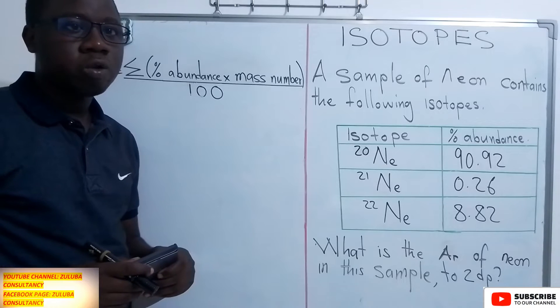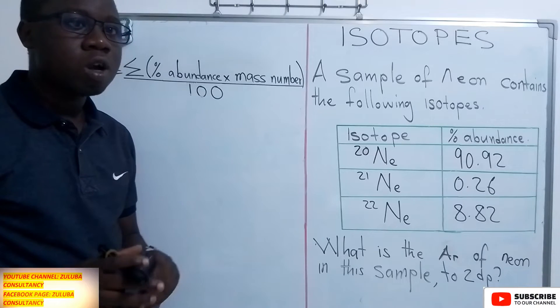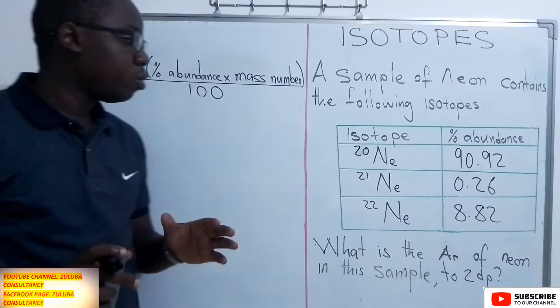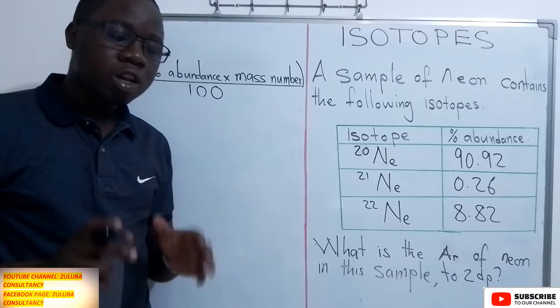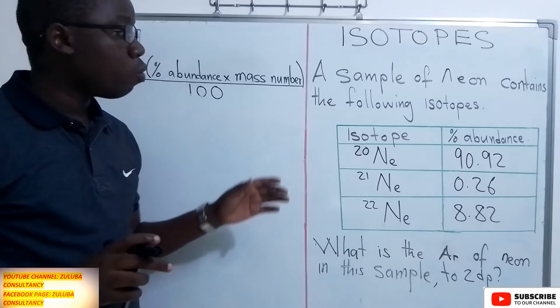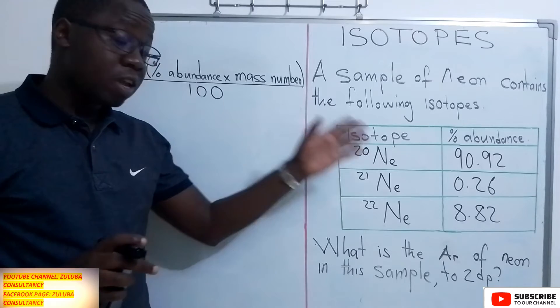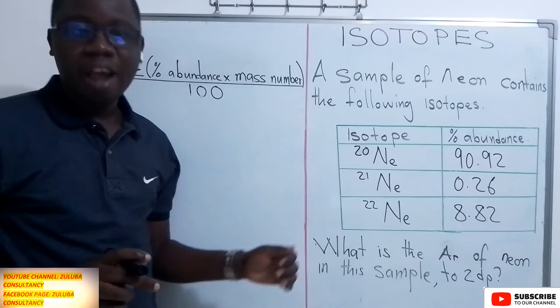Hello and welcome back to Zuluwa Consultants. In this video, we want to see how we calculate the relative atomic mass when we have been given the percentage abundance of the isotopes.